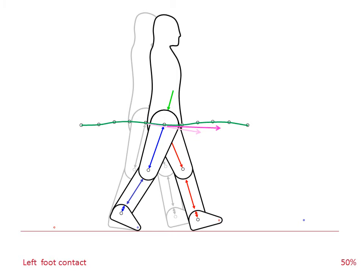Most of the deceleration of the centre of mass in the vertical direction has thus been achieved in late swing before the foot makes contact with the floor. Note that this is quite different to the common misconception that the body is falling when it hits the floor and that vertical deceleration is achieved by the leading limb after foot contact.